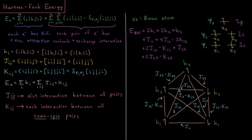So as I mentioned, J is the electrostatic interaction between all pairs of electrons, K being the exchange interaction between all same-spin pairs of electrons.